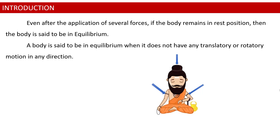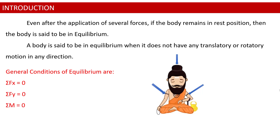Translatory motion is horizontal, vertical, or inclined motion. Rotatory motion is rotation clockwise or anti-clockwise. The general conditions of equilibrium are: the sum of forces in the x-direction should be zero, the sum of forces in the y-direction should be zero, and the sum of moments should be zero — that is, ΣFx = 0, ΣFy = 0, and ΣM = 0. ΣFx = 0 and ΣFy = 0 correspond to translatory motion; ΣM = 0 corresponds to rotatory motion.